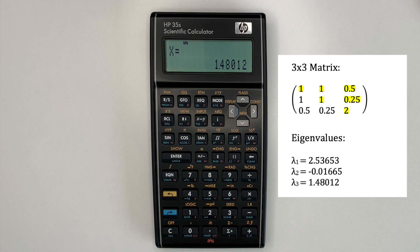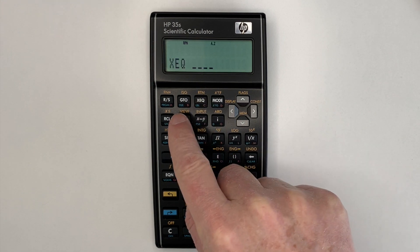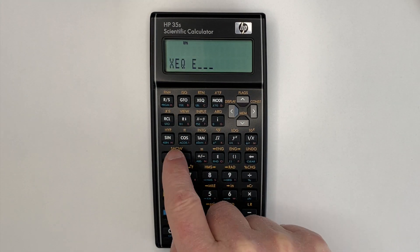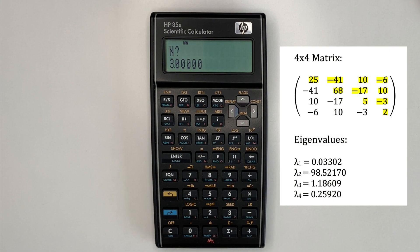The next example is a 4x4 matrix. So we'll run the program again, execute E. And it asks for the matrix size, enter 4, and it's asking for element 1,1.